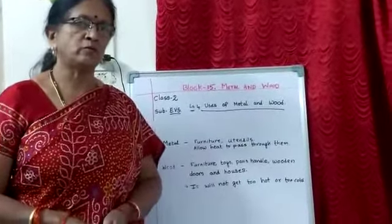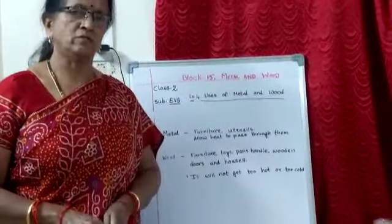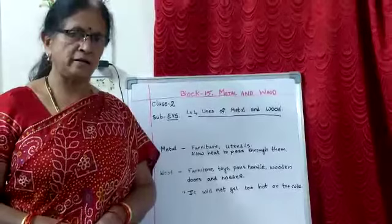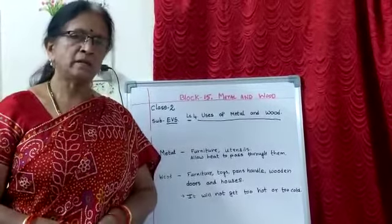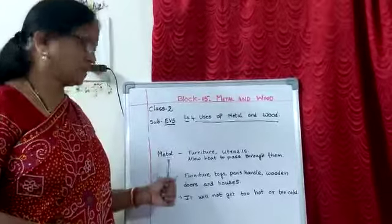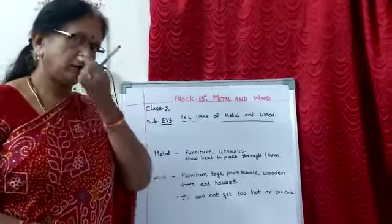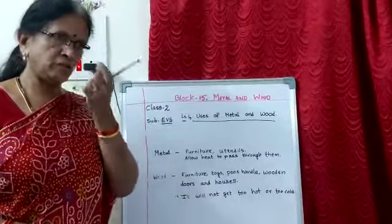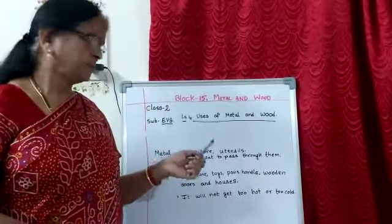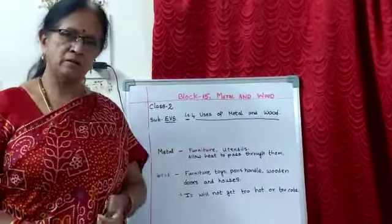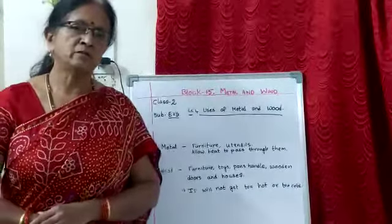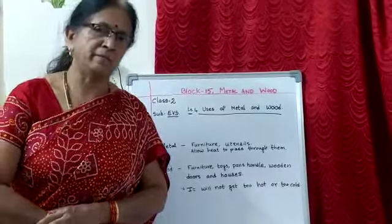In this topic, we are going to learn what are the uses of metal and wood — what are the things we are making with wood and metal. So many things we are making with wood and metal. First, we are going to learn about metal: what furniture we are using, and utensils we are making with metal.